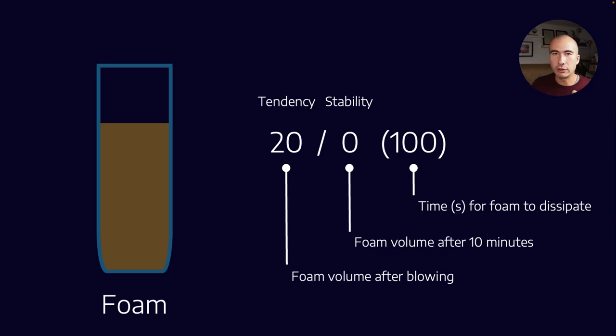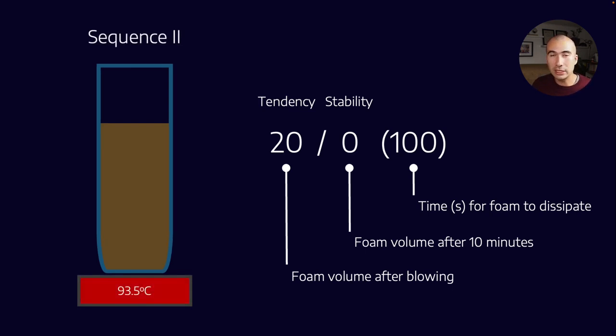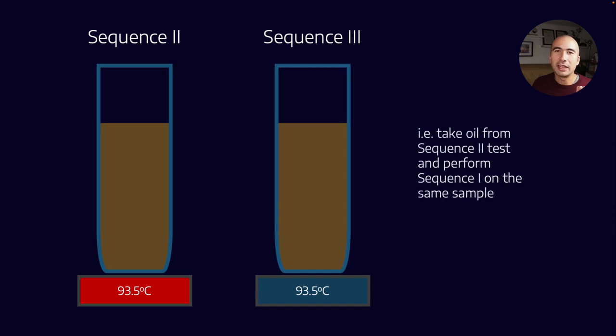The other thing that you would have seen is different sequence numbers. There was a sequence one, that's run at 24 degrees Celsius. Sequence two is exactly the same test done at 93 degrees Celsius. And sequence three is basically you take the oil from sequence two, and then you let it cool down back to 24 degrees Celsius, and then you do the test again.